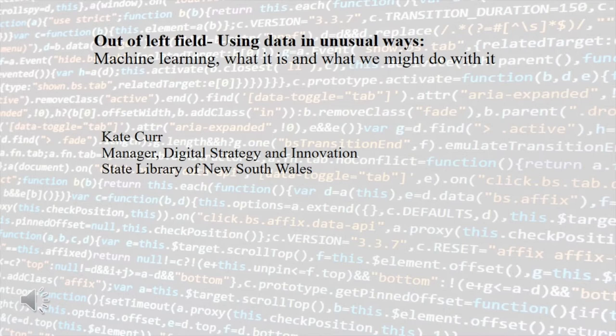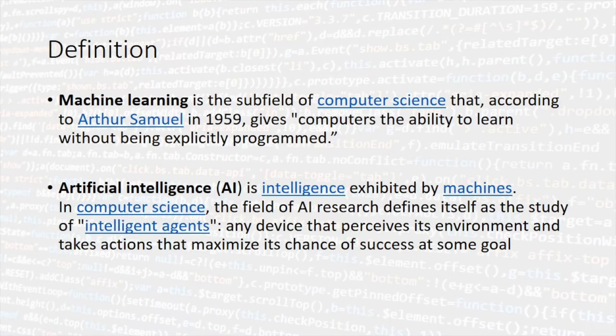Like all good library talks we start with the definition. Machine learning is the subfield of computer science that, according to Arthur Samuel in 1959 — and 1959 is key, it's been going on for a very long time — gives computers the ability to learn without being explicitly programmed. We give the computer some information, show it more, and it starts to make connections and can start to predict. Slightly scary, but lots of options for us.